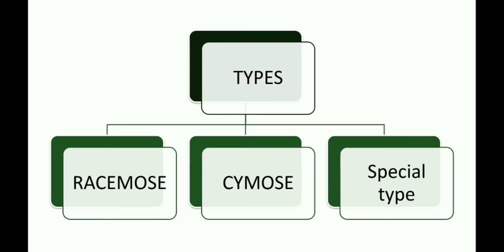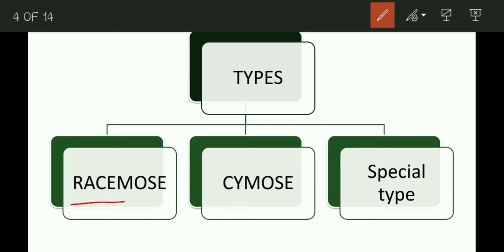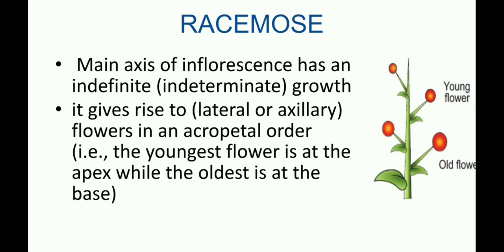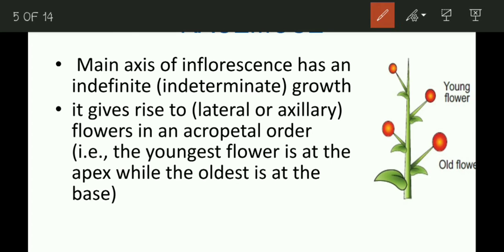There are three types of inflorescence: the first is racimose, the second is cymose, and the third is a special type. First, what is racimose? Racimose is the type of inflorescence in which the main axis grows indefinitely.